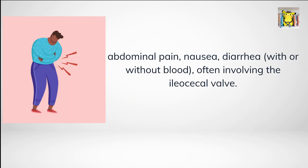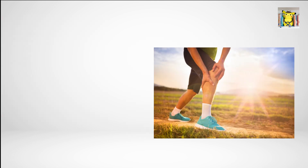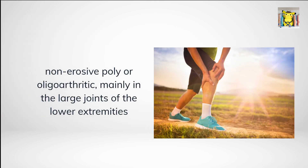Gastrointestinal manifestations include abdominal pain, nausea, and diarrhea with or without blood, often involving the ileocecal valve, resembling inflammatory bowel disease or irritable bowel syndrome. Arthritis affects up to half of patients and is typically non-erosive poly- or oligo-arthritic, mainly in the large joints of the lower extremities.